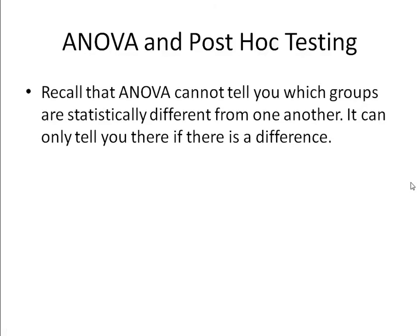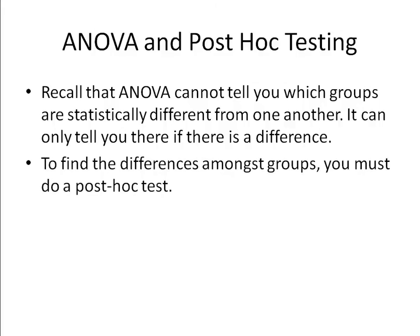So, just as a recap, remember that an ANOVA cannot tell you which groups are statistically significant from one another. It can only tell you globally if there is a difference, so you need some sort of test afterwards to find which groups are statistically significant from one another, and that's where our post-hoc tests come in.